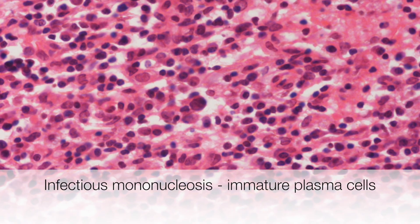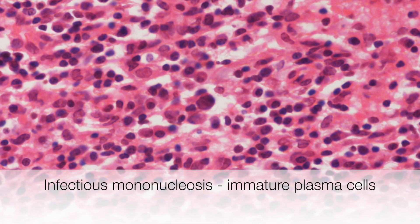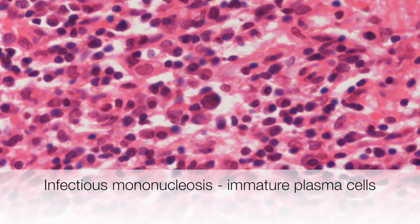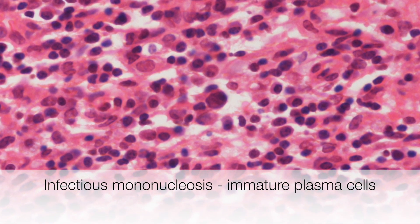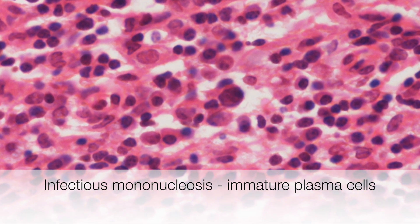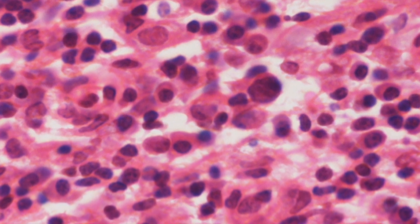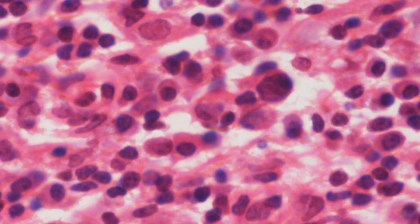This field contains immature plasma cells with fairly abundant deep pink staining cytoplasm and dark nuclei.